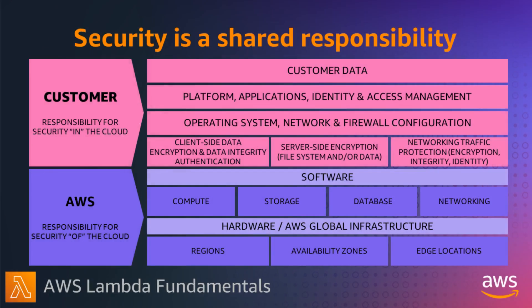Security is the highest priority for all of AWS and its services. We have the shared responsibility model, which has a separating line that defines how AWS is responsible for security of the cloud — the infrastructure and software that runs all our services — and your responsibility for security in the cloud to ensure your applications and data are secure.